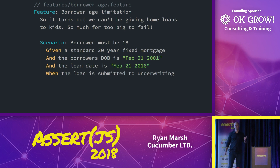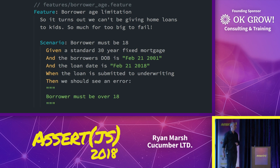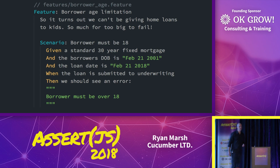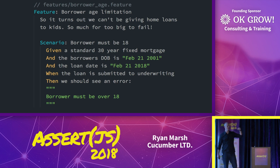Next up, there's a 'when' — that's yellow too, that probably means something. 'When the loan is submitted to underwriting.' The 'when' is our action. We have context, we have action. What's next? An outcome. 'Then we should see an error.' The 'then' matters. Given, when, and then — these are important keywords. Since everybody in the room has read Kent Beck's test-driven development book, you'll recognize given, when, and then because they correspond — context, action, outcome — with arrange, act, assert.